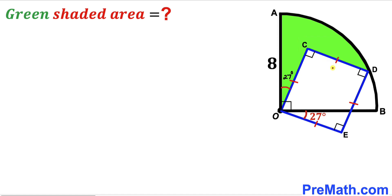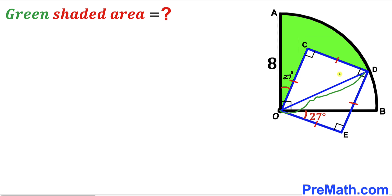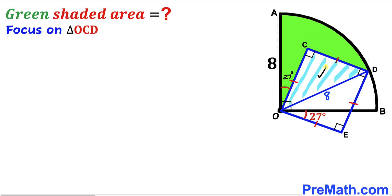Now we are going to calculate the side length of this blue square. We connect center O with vertex D. As a result we get right triangle OCD, where OD is the hypotenuse of this right triangle. Furthermore, OD is the radius of the quarter circle as well, so OD has got to be 8 units. This triangle OCD is an isosceles triangle.